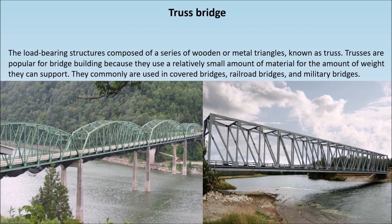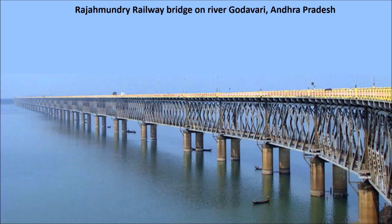Truss bridge — the load-bearing structure of a truss bridge is composed of a series of wooden or metal triangles, known as trusses. Trusses are popular for bridge building because they use a relatively small amount of material for the amount of weight they can support. They are commonly used in covered bridges, railroad bridges, and military bridges. The Rajamundari Railway Bridge on the River Godavari, Andhra Pradesh is an example of a truss bridge.